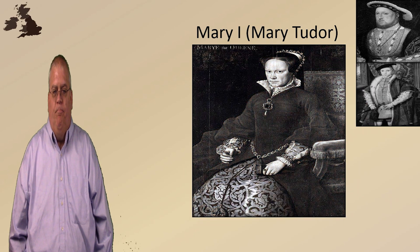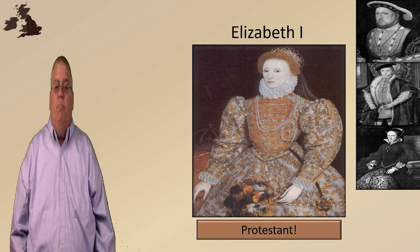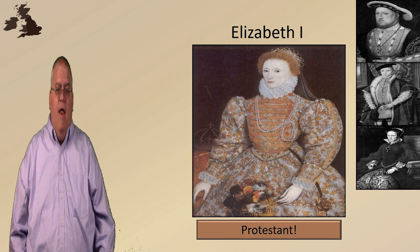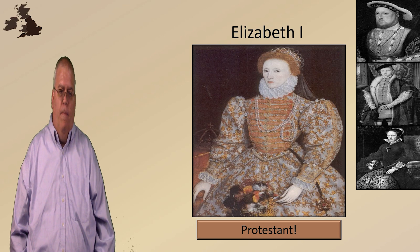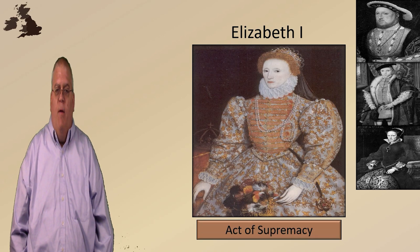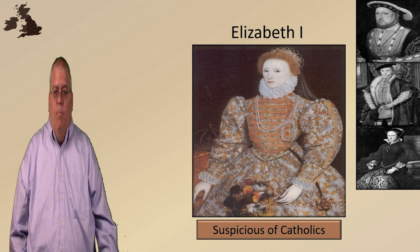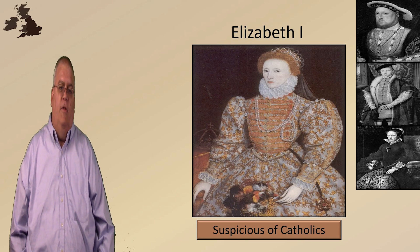And then Mary eventually died. Mary was succeeded by her half-sister Elizabeth, daughter of Henry's second wife. Elizabeth was Protestant by sympathy and of necessity — she was the mirror opposite of Mary, in that if the Pope was right, Elizabeth's mother was not married to Henry and she was not the rightful ruler, so Elizabeth sided with the break from Rome. She reinstated the Act of Supremacy, saying that she, not the Pope, was in charge of the English Church. And she was very suspicious of Roman Catholics — and rightly so, because there were a number of assassination plots against her by those in England with Roman Catholic sympathies.